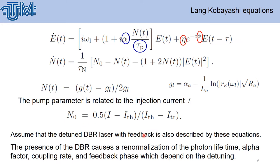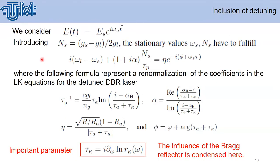Assuming that the tuned DBR laser with feedback is also described by these equations, we consider the external tuning and look for external cavity modes. We introduce the stationary values for omega s and ns.